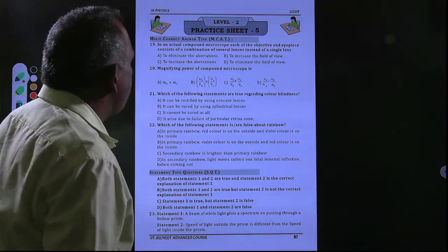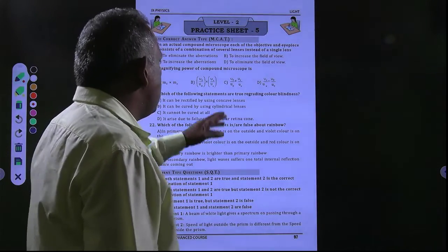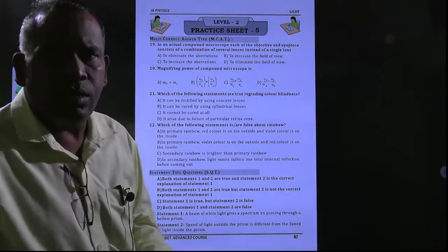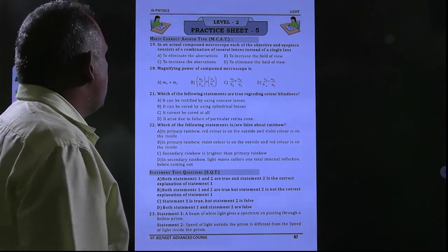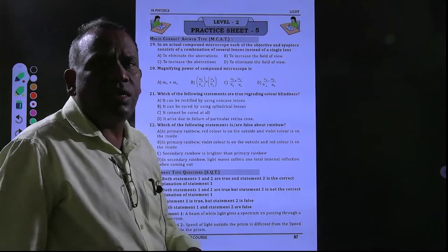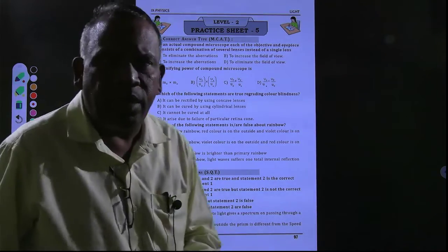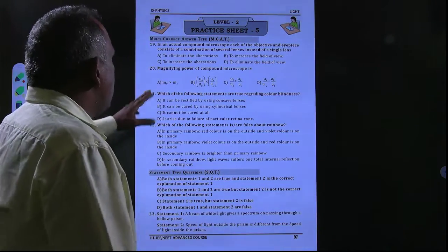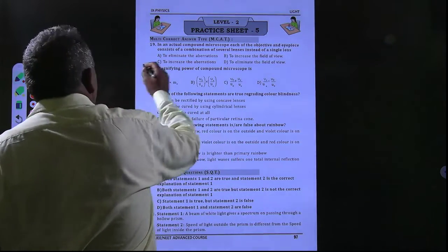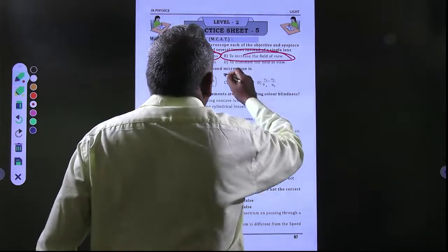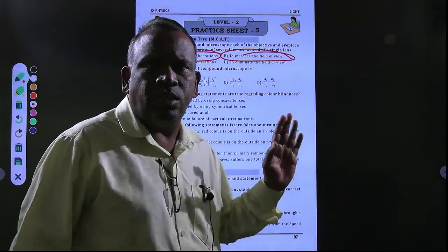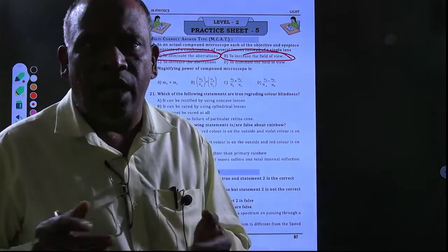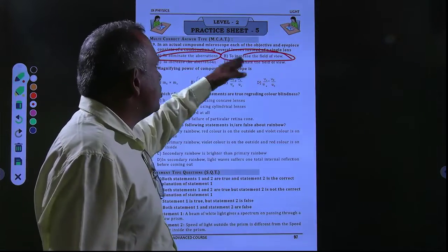The first option is to eliminate the aberrations. The second option is to increase the field of view. The third option is to increase the aberrations, and the fourth is to eliminate the field of view. Aberrations are nothing but defects in the lens. To eliminate these defects, we use the objective lens and eye lens as two different lenses. If you use a single lens there is a chance of having defects, so to avoid that we use two different lenses.